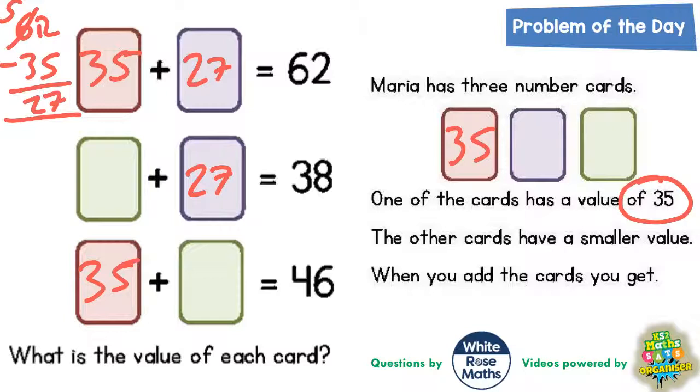That would leave the purple one being worth 27, and that means this purple one would be worth 27. Then the green one would make 27 add up to 38, and we can probably do that in our heads. That's going to be 11.